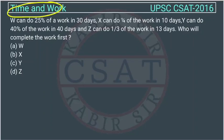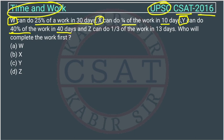This is a question of time and work asked by UPSC in their CSET paper of 2016. W can do 25% of the work in 30 days. X can do 1 by 4 of the work in 10 days. Y can do 40% of the work in 40 days, and Z can do 1 by 3 of the work in 13 days. Who will complete the work first?